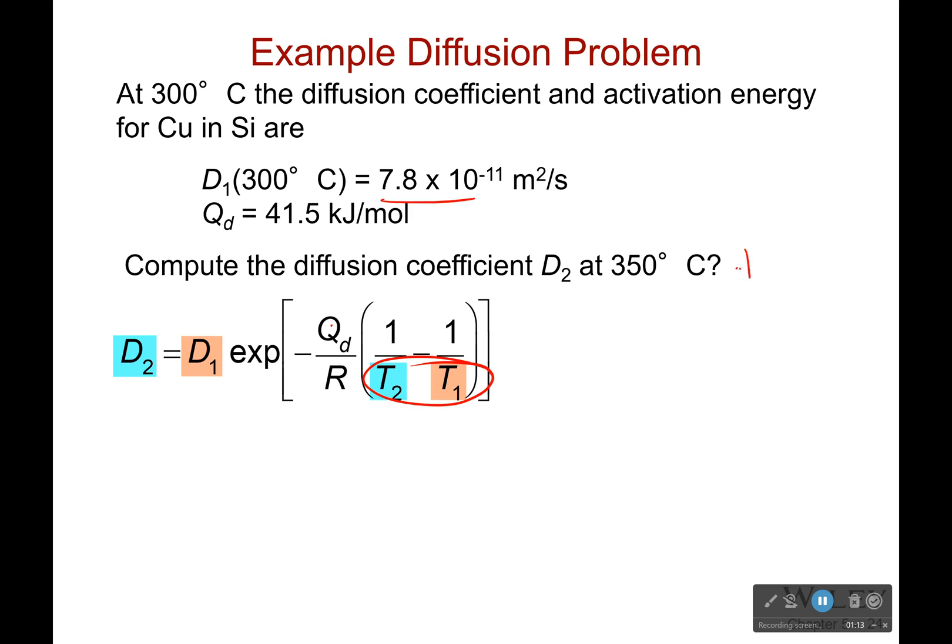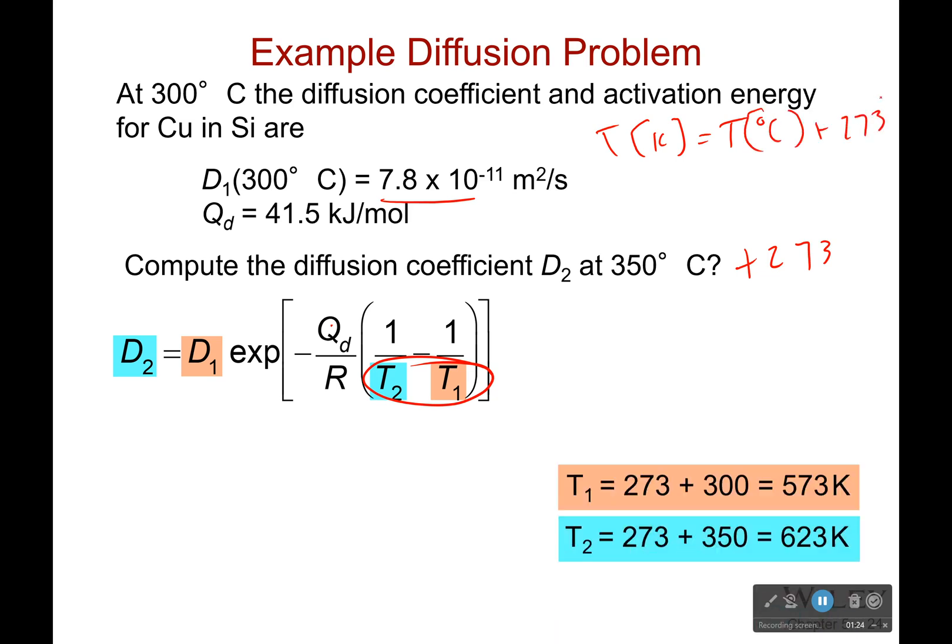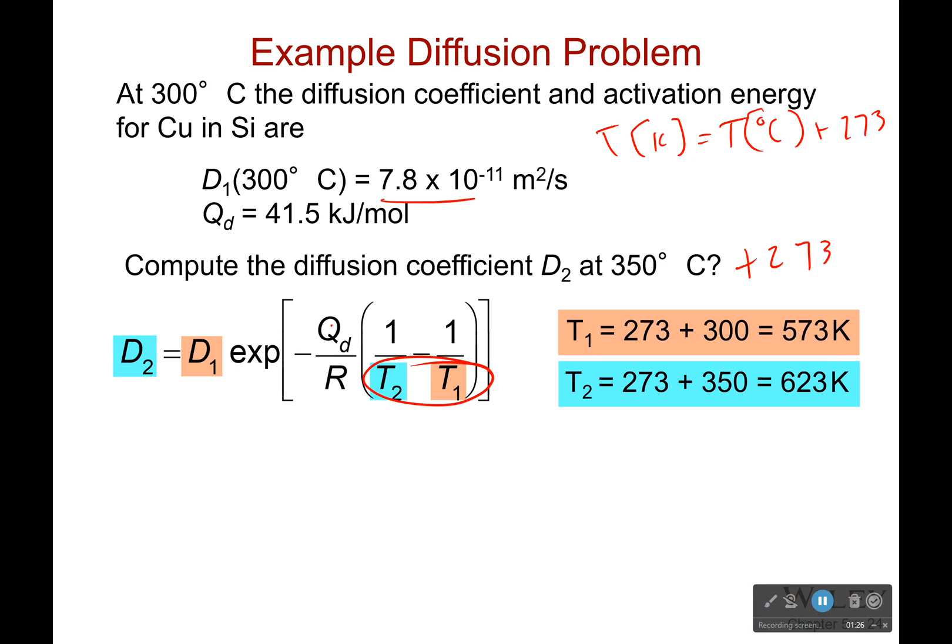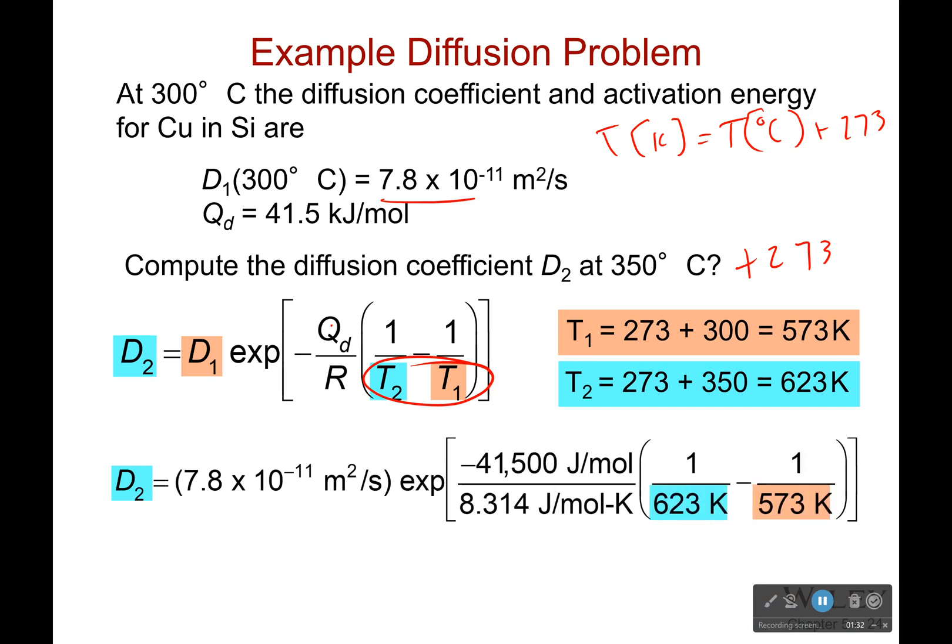The way you do that is you simply add 273. Temperature in Kelvin equals the temperature in degrees Celsius plus 273. So we do that, we get T₁ = 573K for one and T₂ = 623K for the other, and we plug in our values. It's really just that simple.